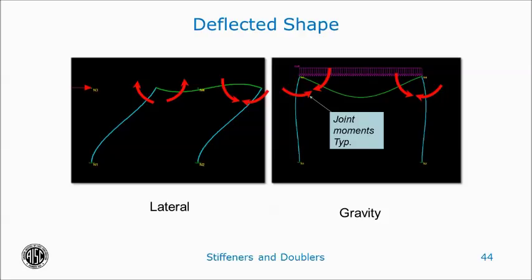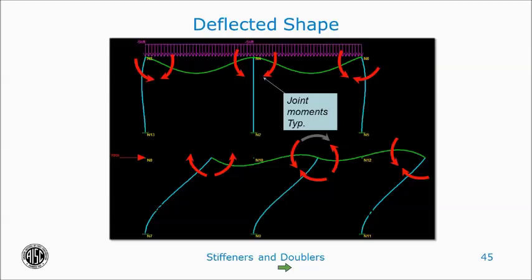At one-sided beam-to-column moment connections, having the actual moments is important but having the breakdown isn't as critical — the moment in the beam is the moment in the column. At two-sided connections, however, it's very beneficial. Moments due to gravity act equal and opposite, so the flange forces on each side simply cancel each other out — there's no panel zone shear. But lateral loads act in the same direction, so there would be a panel zone subject to increased shear. If the moment is controlled by dead load, having the breakdown of dead, live, and lateral loads is going to be a huge advantage.